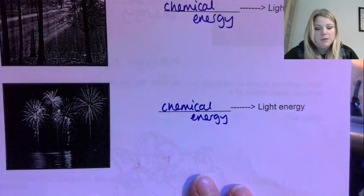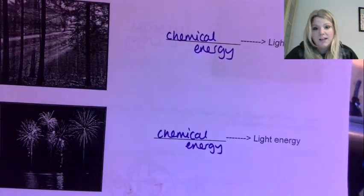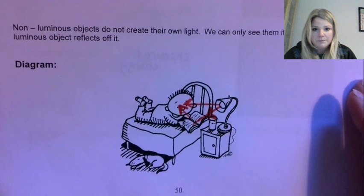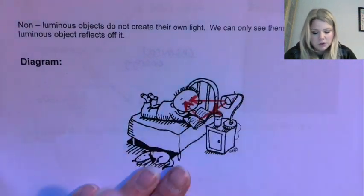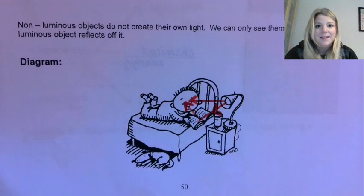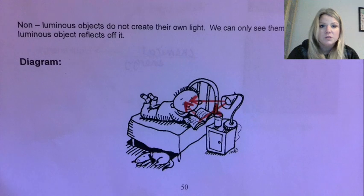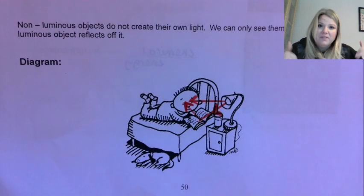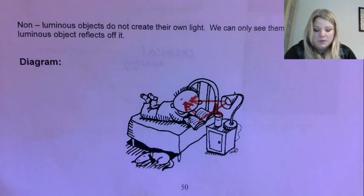Then we spent a little bit of time if you remember looking at the energy transfers that were taking place with particular light sources, so I'll not worry about going over those too much. Now this little diagram here we drew to show how we actually see things that aren't luminous. So anything which is most things that don't produce their own light, and we see them because they reflect the light that is coming from a luminous source.